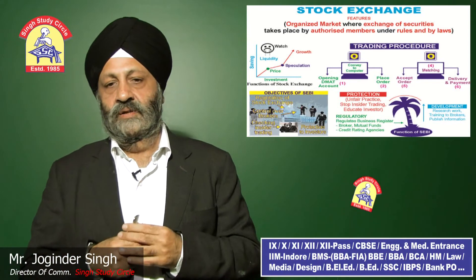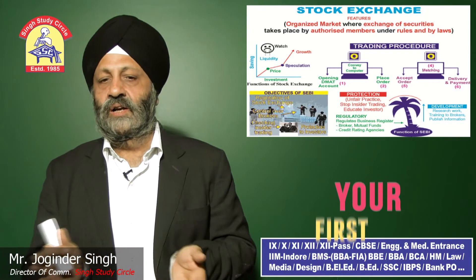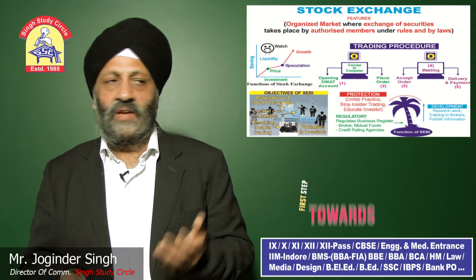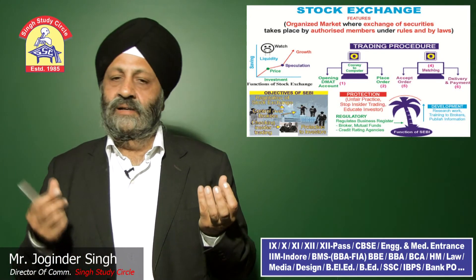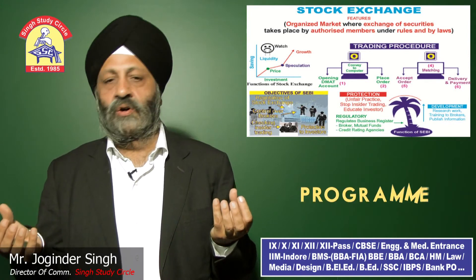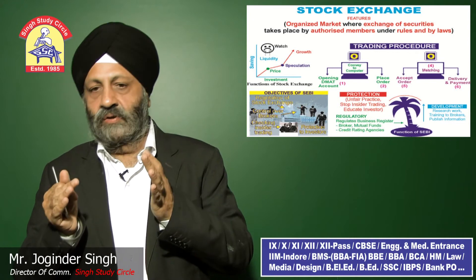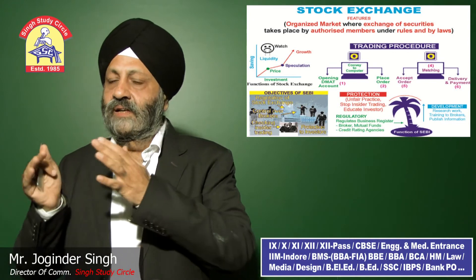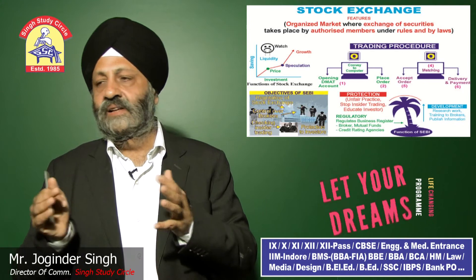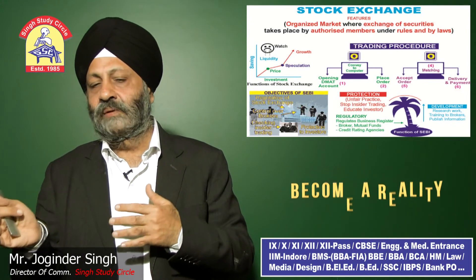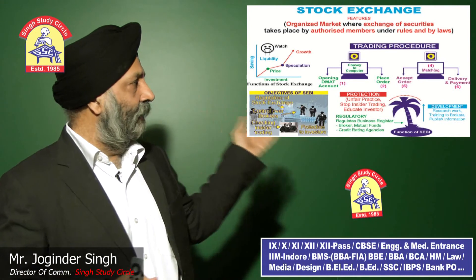The trading procedure is now fully electronic. First, you open a DMAT account. Then a person places an order through a computer, the computer accepts the order, matches it, and the transaction takes place. After matching, delivery is made on the settlement date. These are the steps in the trading procedure.